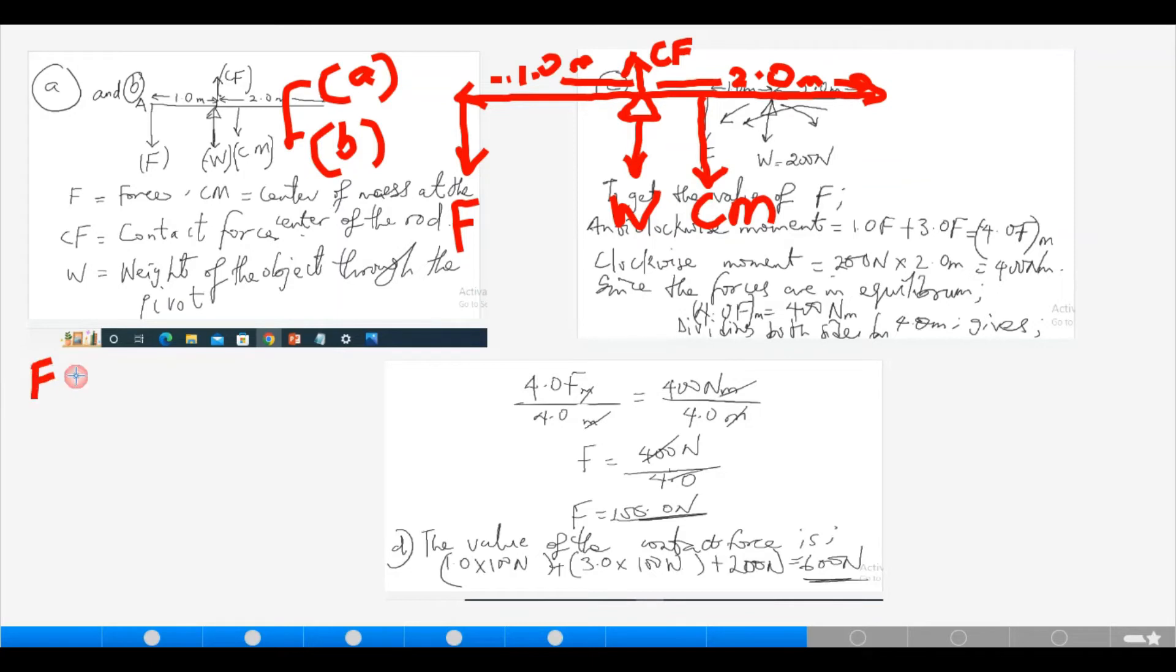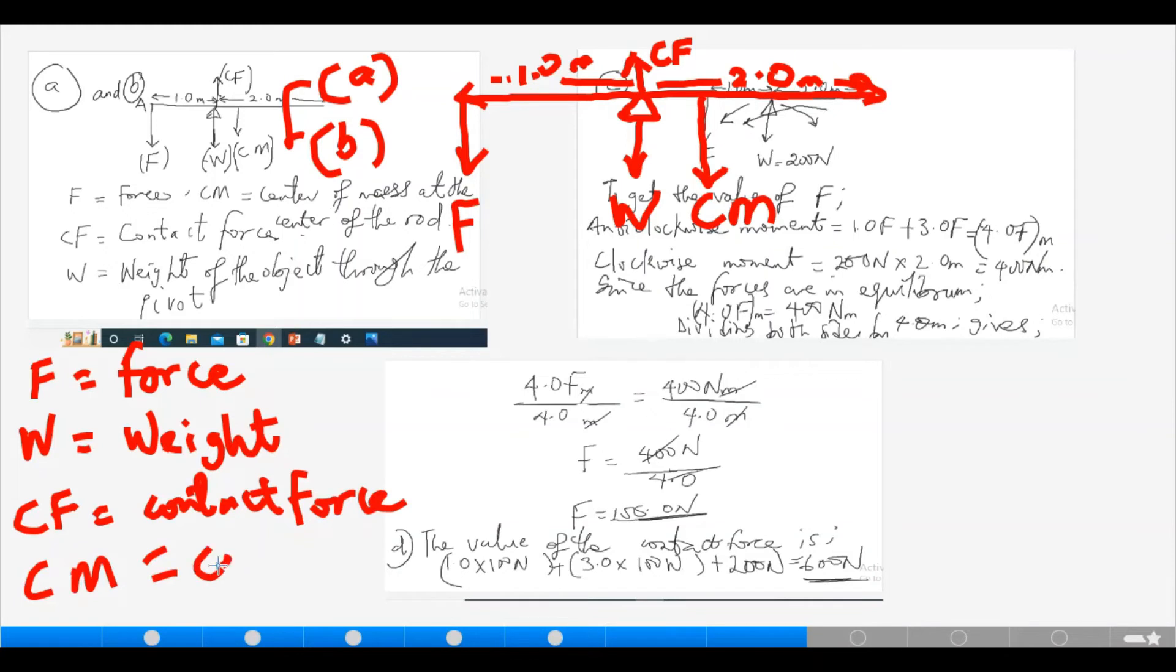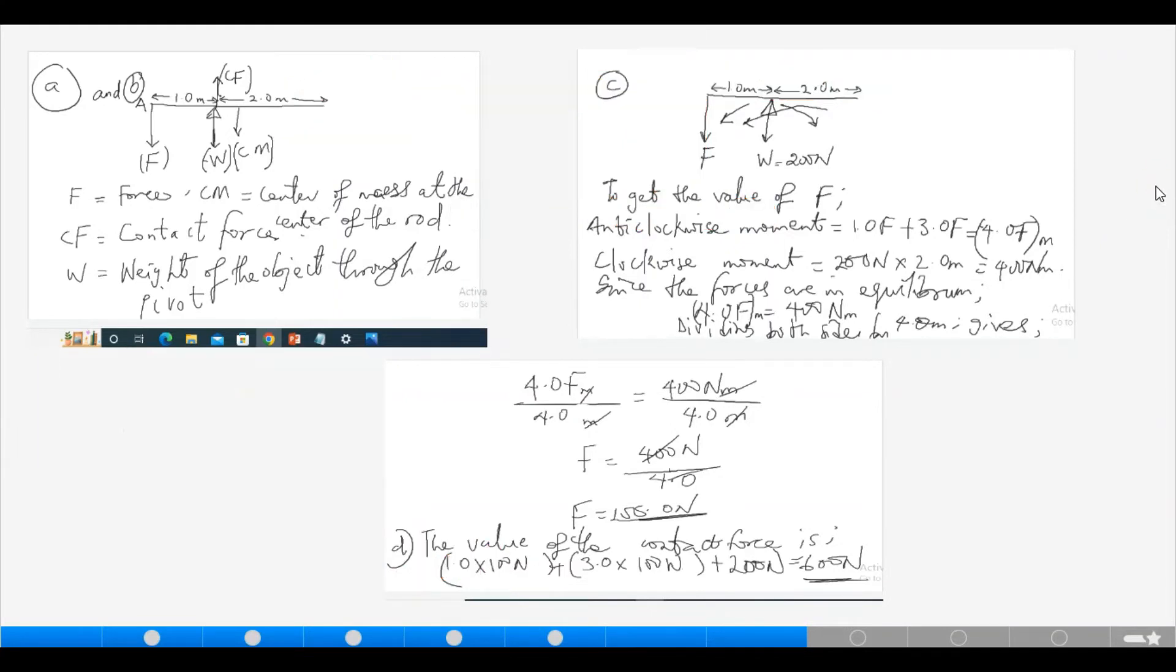And don't forget that center of mass will always act at the center. 1 plus 2 is 3, unit is in meters, that's 3 meters divided by 2 will give us 1.5 meters. So let's pick this point as 1.5 meters. That will form the region of our center of mass. So I have F now to be the force that we are asked to label. Here I have W as weight. I have CM as contact force. And I have CM as the center of mass.